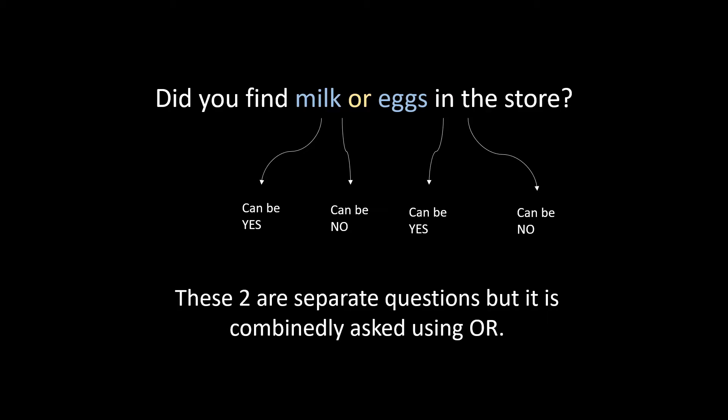Similar to AND, we make the conditions using OR as well by simply asking a question: Did you find milk or eggs in the store? Similarly this is asking two questions which can be either yes or no in all these cases. Two questions are combinedly asked using OR.